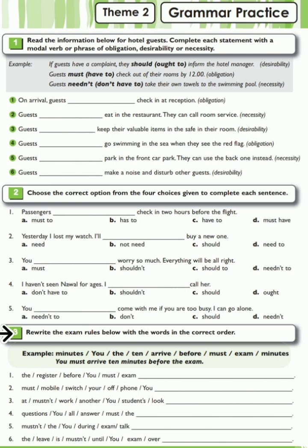Rewrite the exam rules below with the words in the correct order. Example: 'Minutes You the 10 arrive before must exam' → 'You must arrive 10 minutes before the exam.' 1. The register before you must exam. 2. Must mobile switch your off phone You. 3. At Mustn't work another You students look. 4. Questions you all answer must the. 5. Mustn't the You during exam talk. 6. The relief is a mustn't until you exam over.